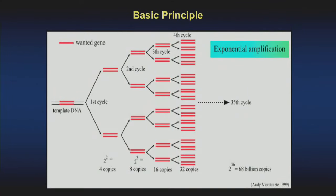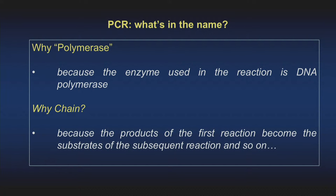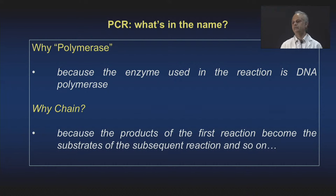The basic principle is you have a template of DNA which you wish to amplify, and from one particular template you get two templates, and so on — it exponentially amplifies during each cycle. It is called PCR because we use an enzyme called DNA polymerase, which faithfully replicates the template DNA. The product of the first reaction forms the template during subsequent reactions — that is the chain. So it is called Polymerase Chain Reaction.